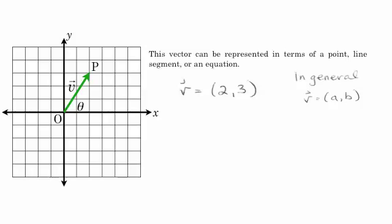We could represent it as a line segment. The vector v is equal to the vector OP, no problem. All the information that we have in this vector is now contained. How do we represent it, though, as an equation? And that's what we want to do. We really want to represent this as an equation.